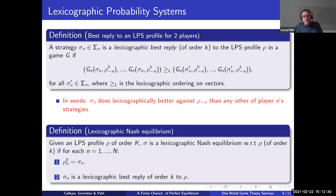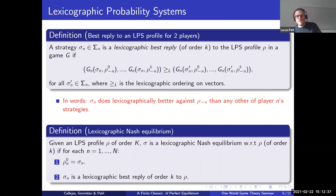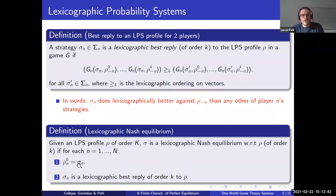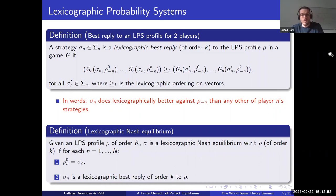We can also generalize Nash equilibrium to lexicographic Nash equilibrium. Given an LPS profile phi of order k, sigma is a lexicographic Nash equilibrium with respect to phi if the first conjecture phi-zero is correct — meaning sigma-n is a lexicographic best reply of order k to phi.